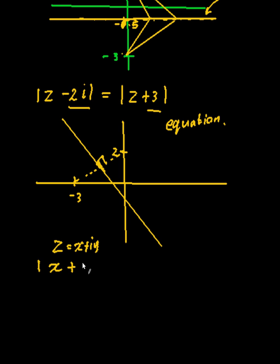So collecting my like terms, in my i I will have x plus (y minus 2) has to be equal to, over here, collecting the like terms again, (x + 3) plus iy. Okay, so that's the absolute value. Now remember the definition of an absolute value of a complex number.